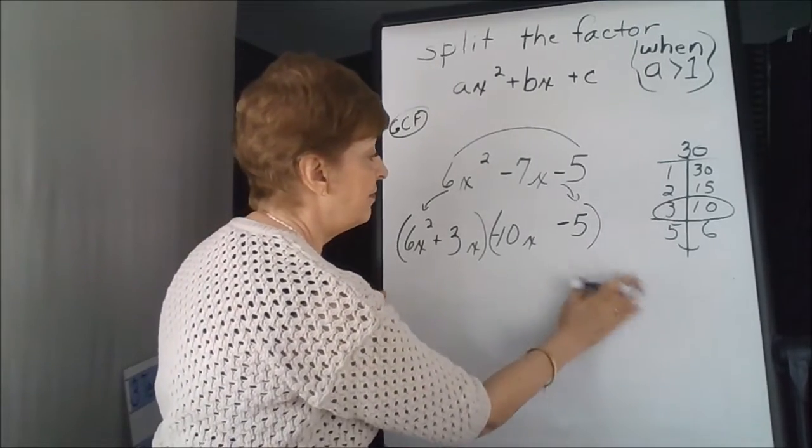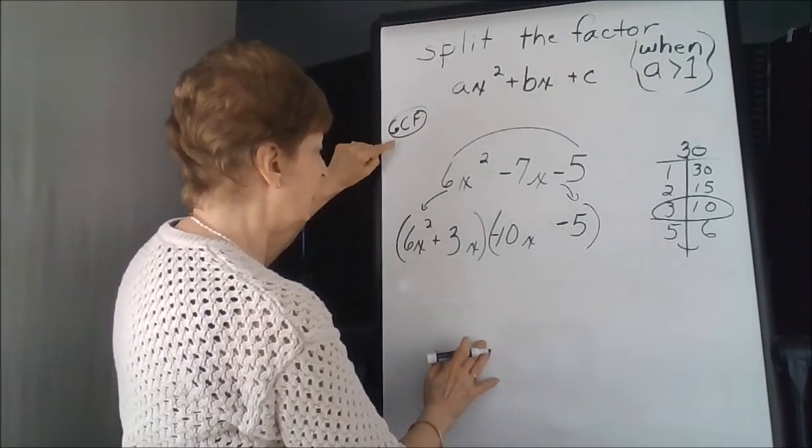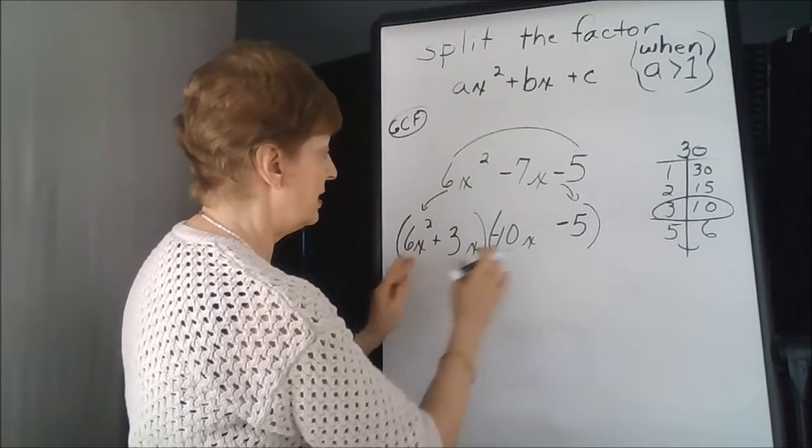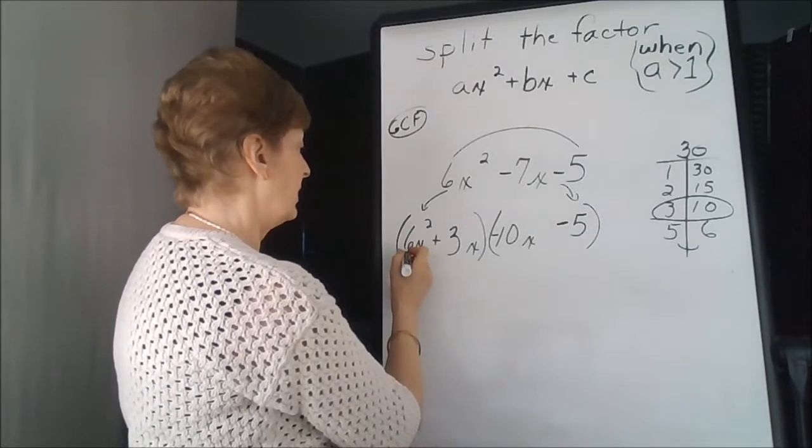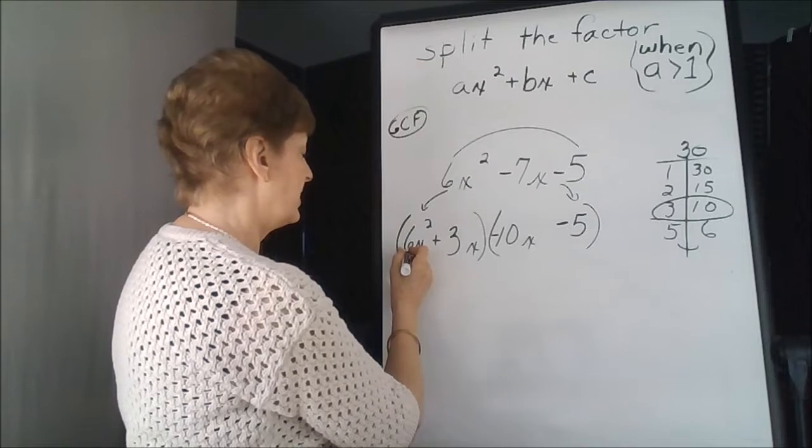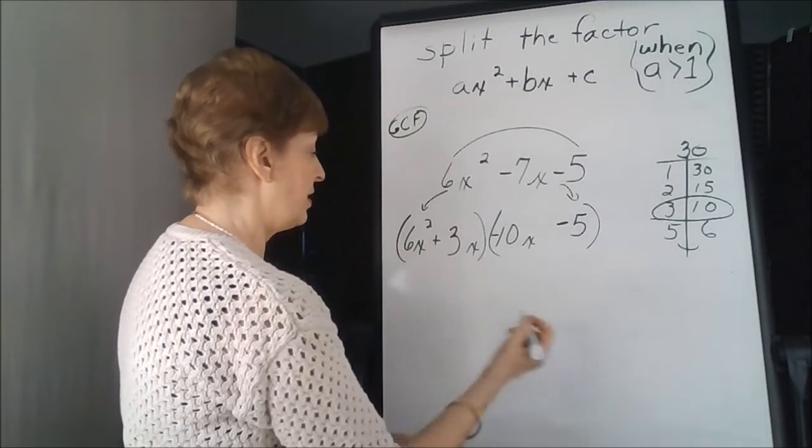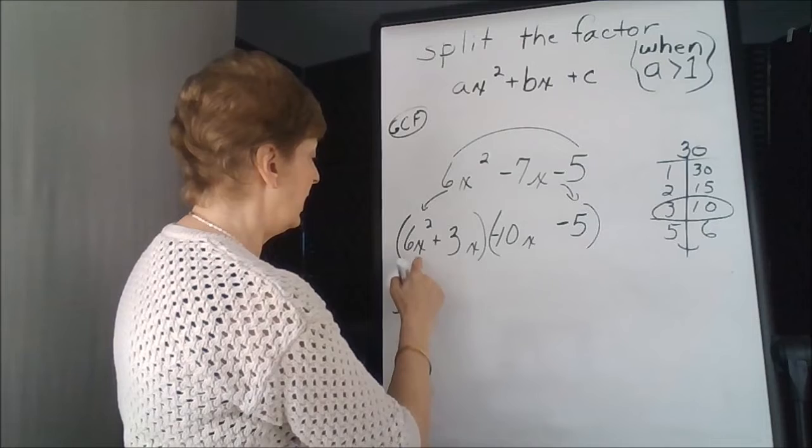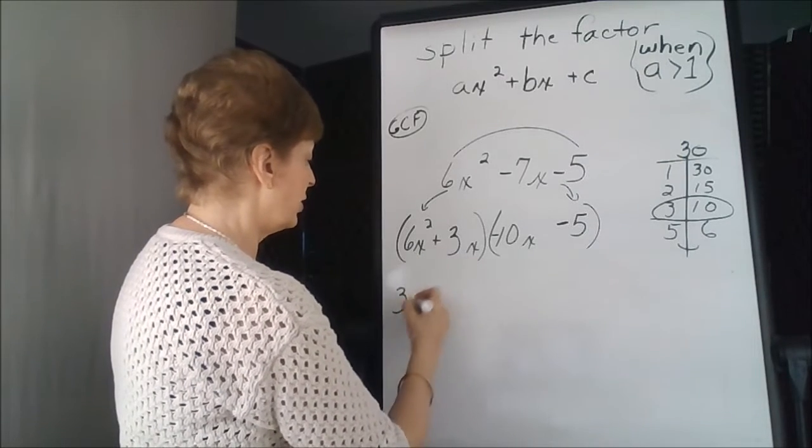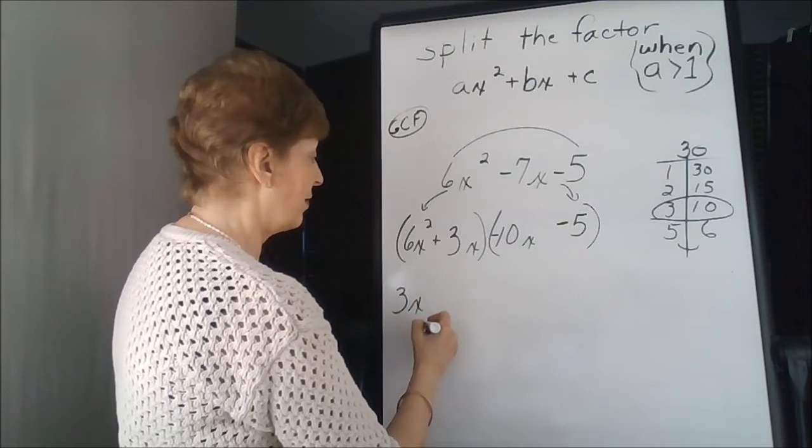Now we're going to actually do our greatest common factor from these two pieces. A 6 and a 3. A 3 will divide into both, so I'm going to take a 3, and there are x's in each of the terms. I'm going to take a 3x out of this.